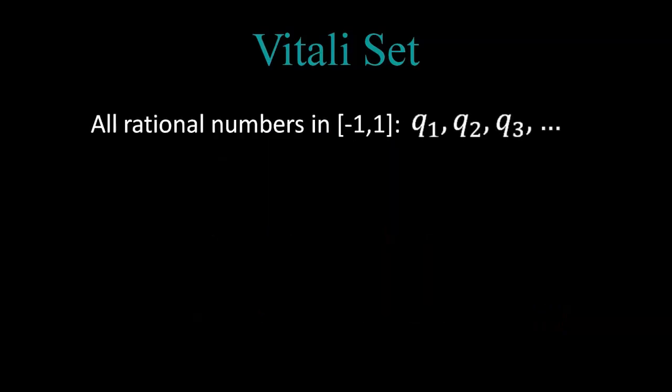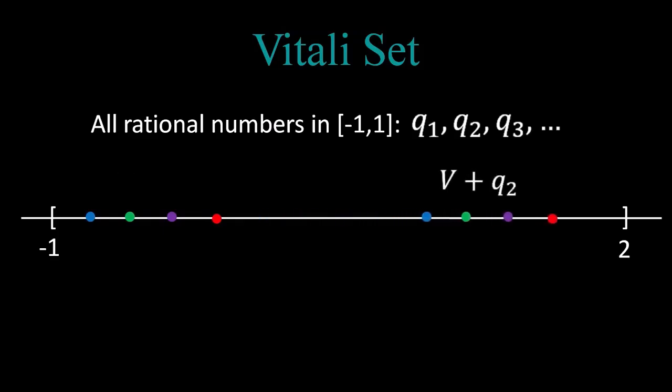And now, we enumerate all the rational numbers in the interval minus 1 to 1, which is countably infinite. We can then look at the union of all of the following disjoint sets: V plus Q1, V plus Q2, V plus Q3, and so on.